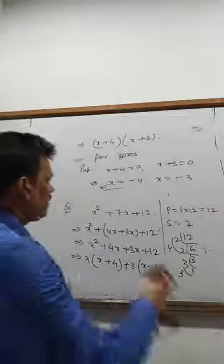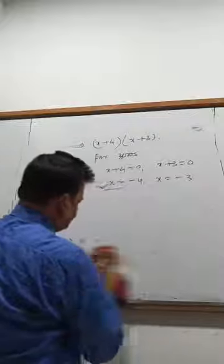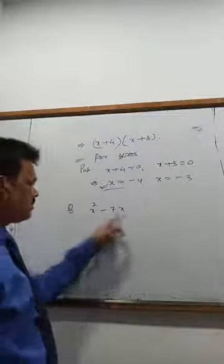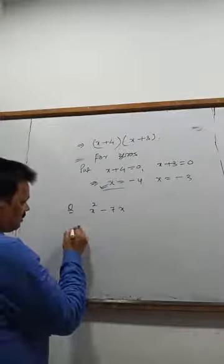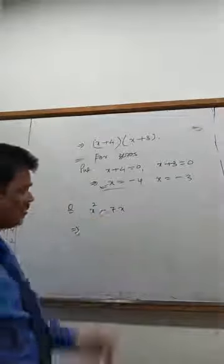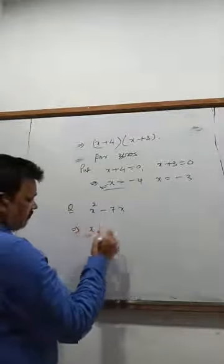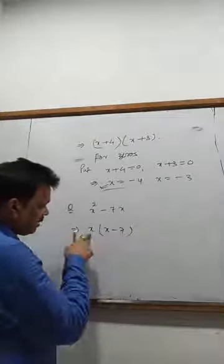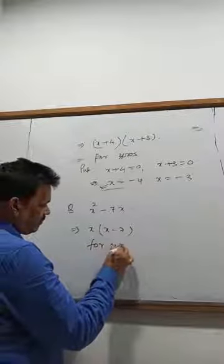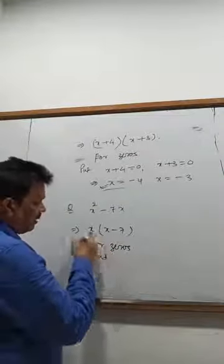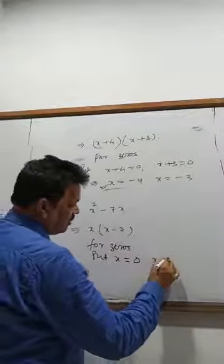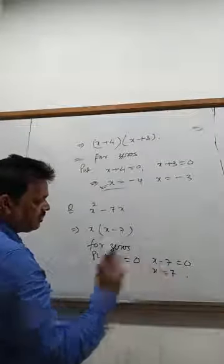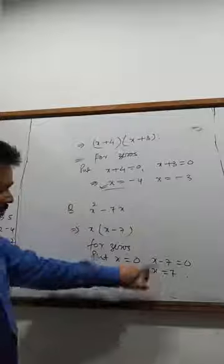Another type: x square minus 7x — only two terms here. Take x common: x(x minus 7). For zeros, put x equals 0 and x minus 7 equals 0, giving x equals 0 and x equals 7. Since the degree is 2, you get 2 zeros.